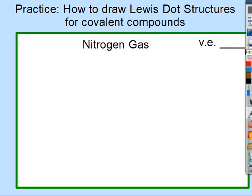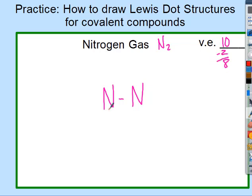Next: nitrogen gas, N2. Nitrogen is diatomic so it can't exist by itself. Add up valence electrons — you should get ten. Since we only have two atoms there is no central atom; they hook together. Subtract two for the bond, leaving eight. Each nitrogen currently has two and needs six more, so we need twelve total — but we only have eight. When you need more than you have, you have to share more.